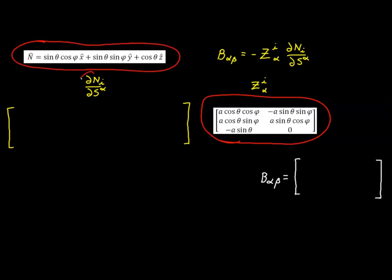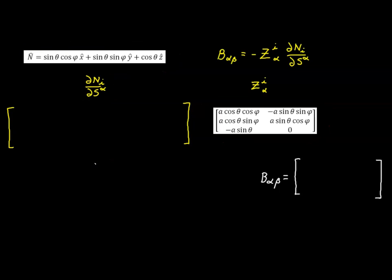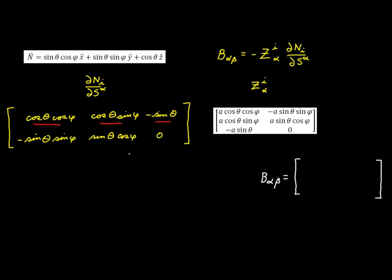The first step again is to evaluate each of these elements to fill out the matrix. For the sake of time, I've already done that. Each item in the first row is the partial derivative with respect to theta of each normal component one by one, and the three elements in the second row are the partial derivatives of n1, n2, and n3 with respect to phi. All that's left now is to form the contraction of these rows and columns.